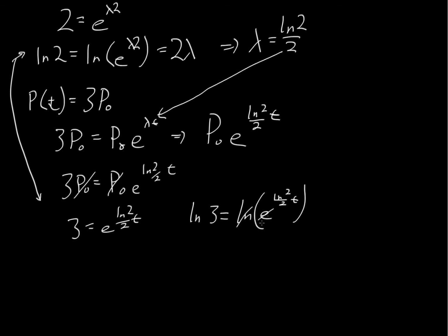Well, these two items will cancel out. So the natural log of 3 equals the natural log of 2 over 2 times t.